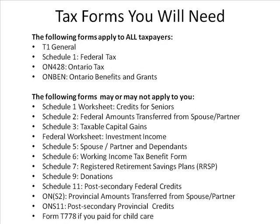The following forms apply to all taxpayers: T1 General, Schedule 1 Federal Tax, ON428 Ontario Tax, and ONBEN Ontario Benefits. The following forms may or may not apply to you: Schedule 1 Worksheet Credits for Seniors, Schedule 2 Federal amounts transferred from a spouse or partner, Schedule 3 Taxable Capital Gains, Federal Worksheet for Investment Income, Schedule 5 Spouse/Partner and Dependents, Schedule 6 Working Income Tax Benefit, Schedule 7 RRSP, Schedule 9 Donations, Schedule 11 Post-Secondary Federal Credits, ONS2, ONS11, and Form T778 if you paid for childcare.